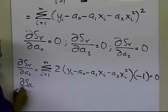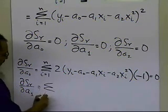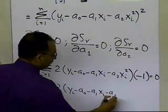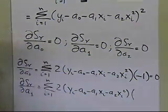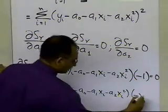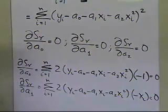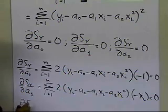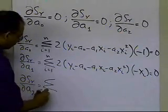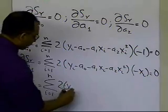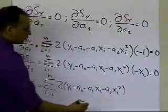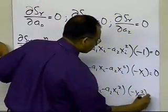Taking the partial derivative with respect to a1: Σ(i=1 to n) 2·(yi - a0 - a1xi - a2xi²)·(-xi) = 0. And the partial derivative with respect to a2: Σ(i=1 to n) 2·(yi - a0 - a1xi - a2xi²)·(-xi²) = 0.